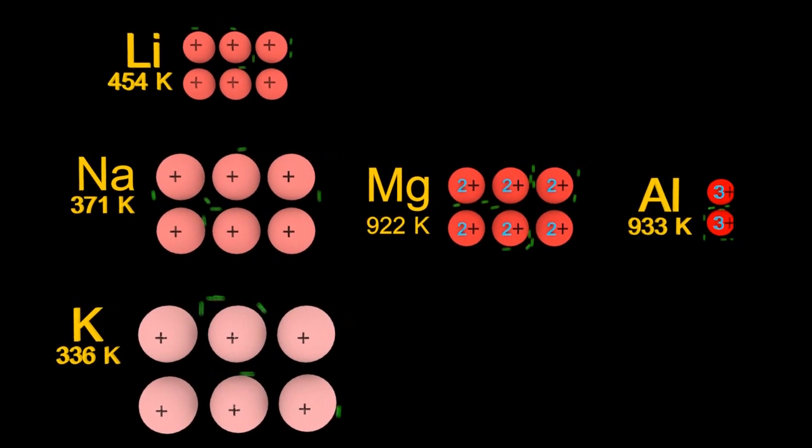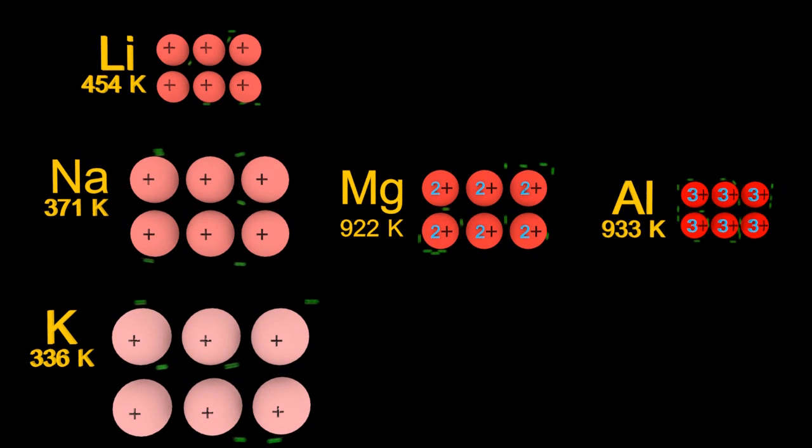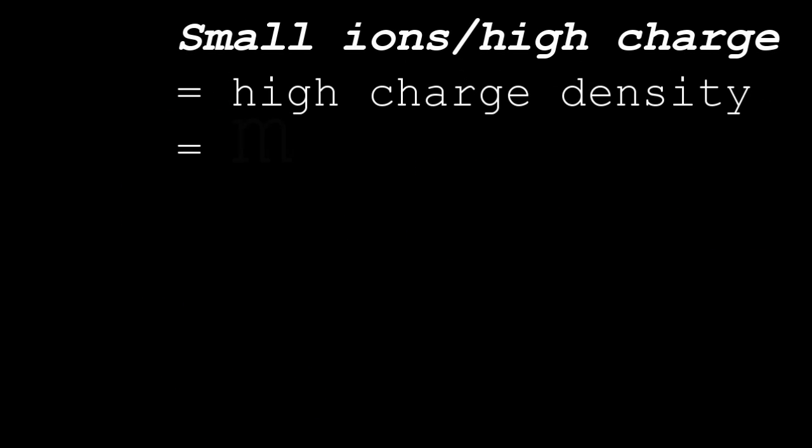And the same idea applies to aluminium: even smaller, more electrons and a +3 charge, resulting in an even higher charge density and stronger metallic bonds.